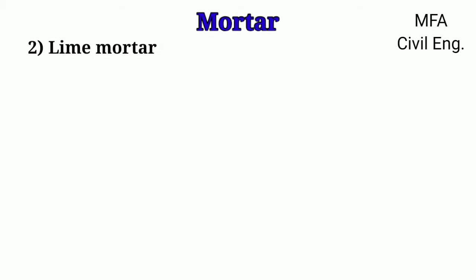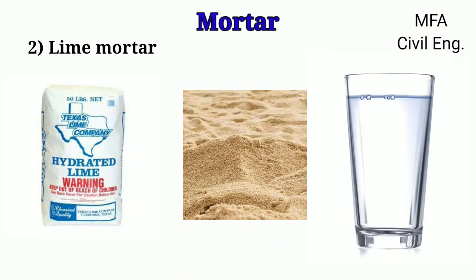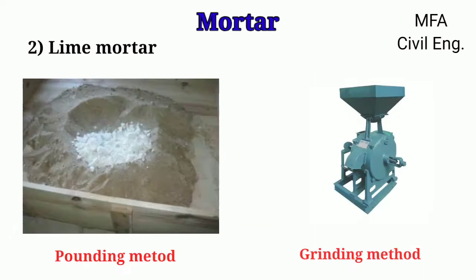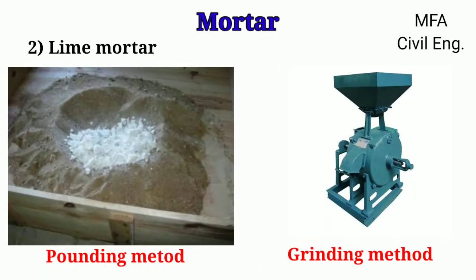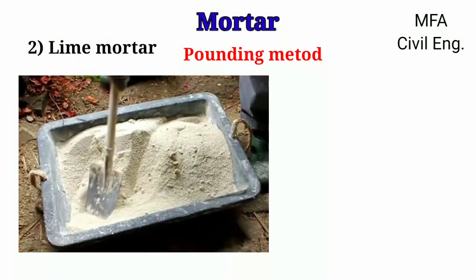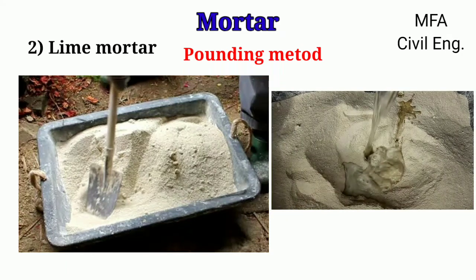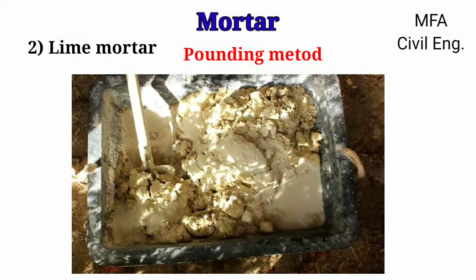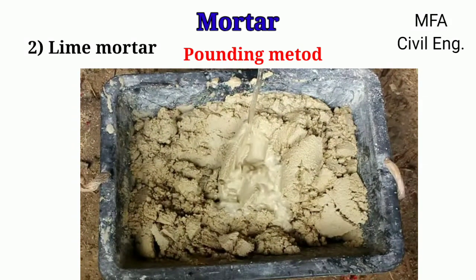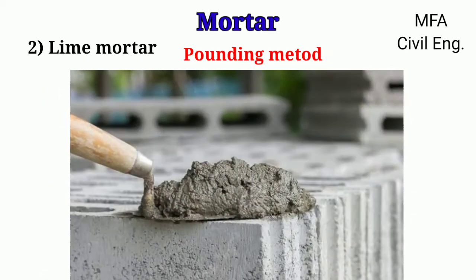Lime mortar is a mixture of lime, sand, and water taken in proper proportions. Lime mortar is prepared by two methods: the pounding method and the grinding method. In the pounding method, lime and sand are mixed in a dry state in appropriate proportions, then the mixture is placed in a pit. Water is added and the mixture is turned up and down frequently. The required quantity of water is added at fixed intervals. When the mortar becomes consistent it is taken out from the pit and is ready to use in masonry work.